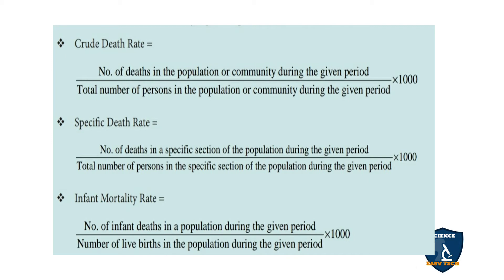Next is infant mortality rate. Infant refers to the period from 28 days to 1 year after birth, while 0 to 28 days is referred to as neonatal. Infant mortality rate equals the number of infant deaths in a population during the given period, divided by the number of live births in the population during the given period, multiplied by 1000.